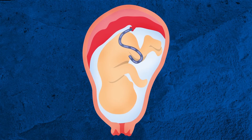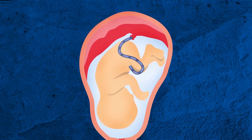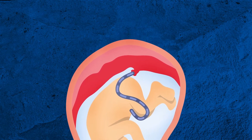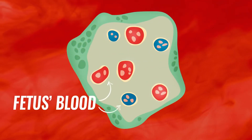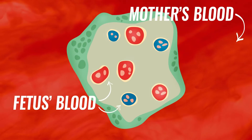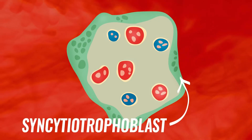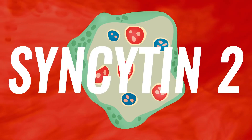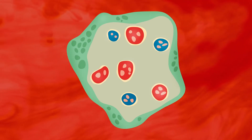The placenta is an organ connecting the developing fetus and the mother inside the womb. The fetus's blood flows through the umbilical cord to the placenta, where only a thin lining of tissue separates the fetus's blood from the mother's blood. Outermost on this very thin tissue layer is the syncytiotrophoblast — a layer of cells fused together via syncytin-2 protein. Syncytin-2 is the name we have given to the domesticated env gene in our genome.